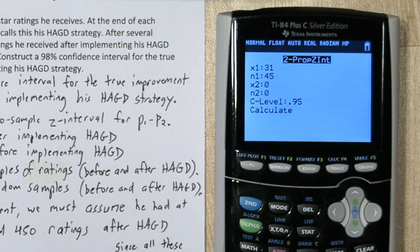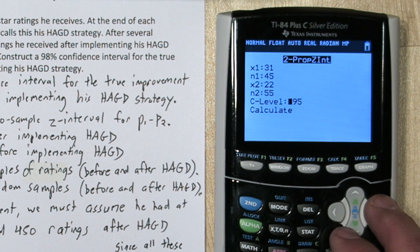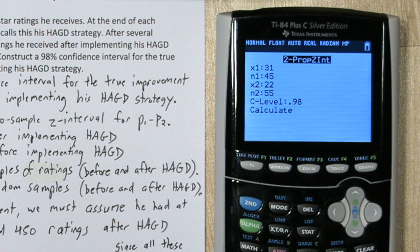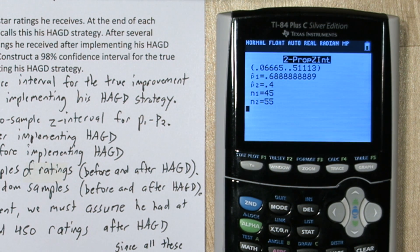In his first sample, he had 22 five star ratings out of a total of 55 samples. And we want to calculate a 98% confidence interval. So if we go down to calculate and press enter, here we go.